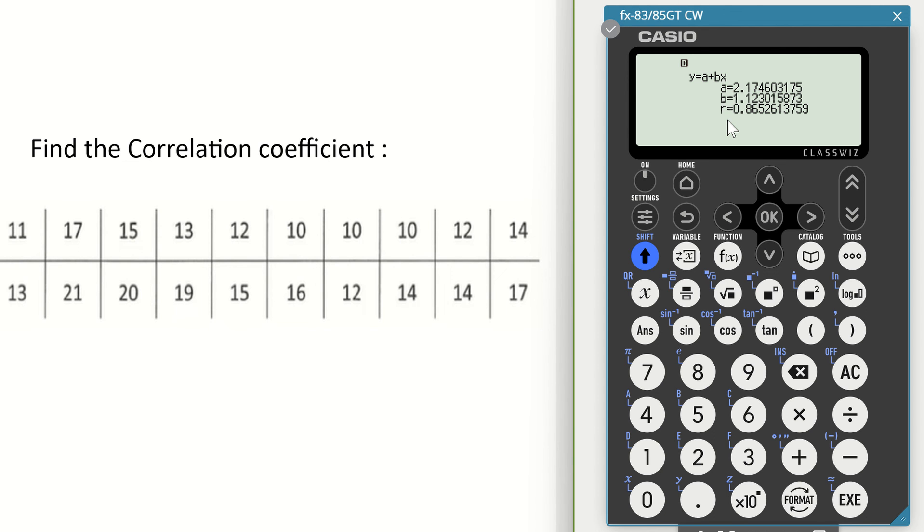So in this particular question, my correlation coefficient is 0.865. Depending on the question, it may ask you to round it to one decimal place or two decimal places.